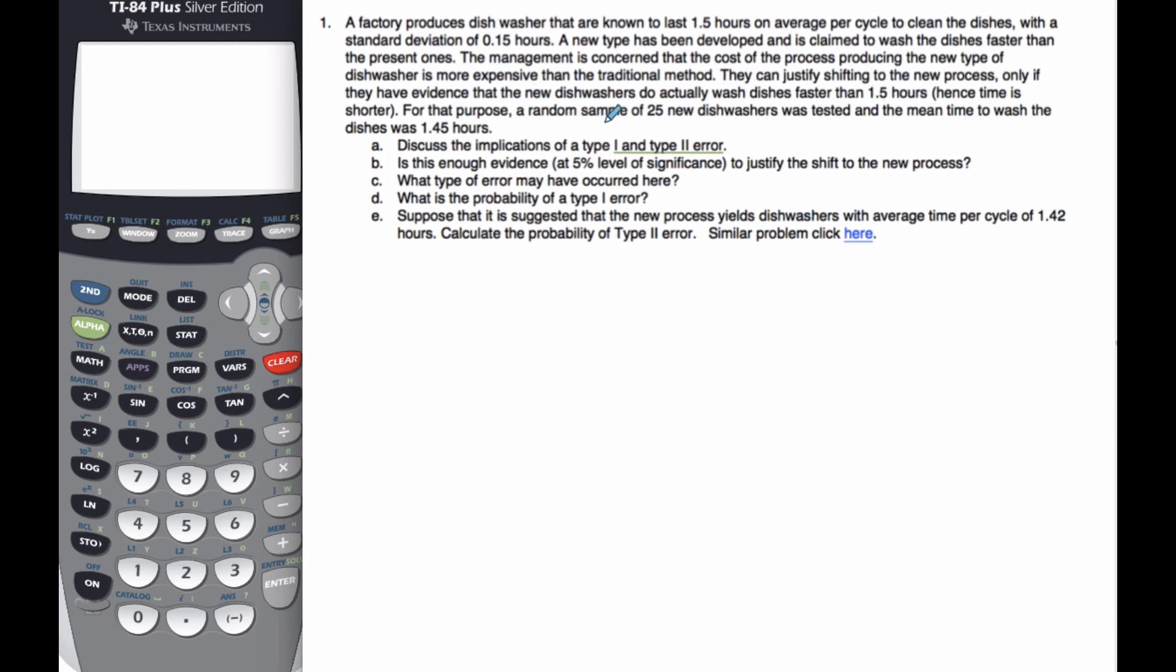For that purpose, a random sample of 25 new dishwashers was tested, and the mean time to wash the dishes was 1.45. Before we do any hypothesis testing, we can find out the type 1 and type 2 errors.